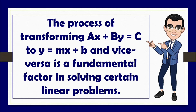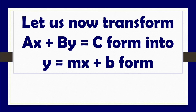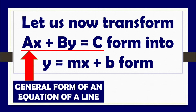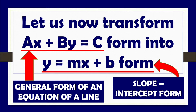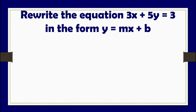The process of transforming ax plus by equals c to y equals mx plus b, and vice versa, is a fundamental factor in solving certain linear problems. Let us now transform the ax plus by equals c form — considered the general form of an equation of a line — into y equals mx plus b, considered the slope-intercept form.